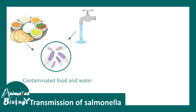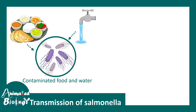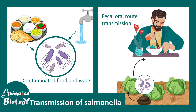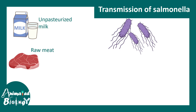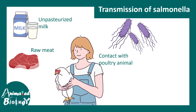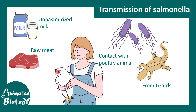Transmission of Salmonella can occur from contaminated food or contaminated water sources. Other than that, there could be fecal-to-oral transmission. For example, if a vegetable field is contaminated with fecal matter containing Salmonella, and that vegetable is not washed properly and someone eats it in a salad, they might get infected. Other sources include unpasteurized milk, raw meat, contact with poultry animals, or reptiles.